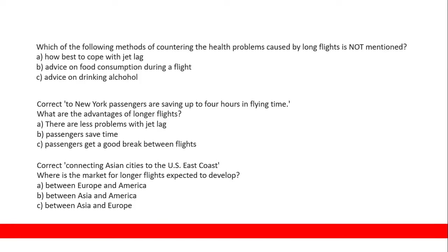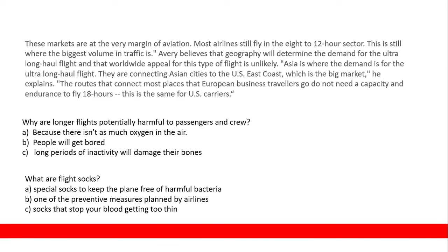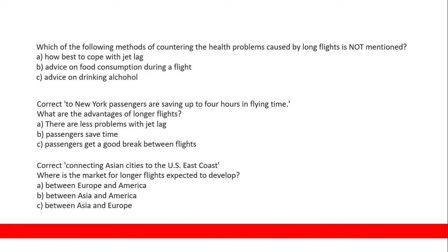'Connecting Asian cities to the US East Coast — where is the big market? A: Between Europe and America. B: Between America and Asia. C: Between Asia and Europe.' Do not assume — go to the paragraph. Asia is where there is big demand for ultra-long-haul flights. We are connecting Asian cities to the US East Coast, which is quoted as the big market. So between America and Asia is the correct answer — B.